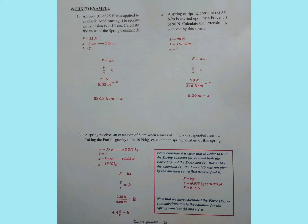Moving on to question 2. It reads that a spring of spring constant 310 Newtons per meter is exerted upon by a force of 90 Newtons. Calculate the extension received by the spring. Likewise, we list the values — we are finding X, so we list it as well and put a question mark beside it.